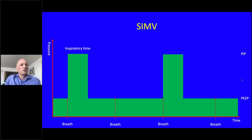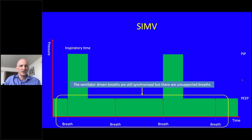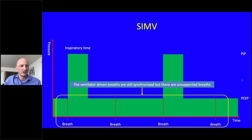With SIMV, only the number of breaths we decide to support are supported. The baby gets synchronised ventilation but there are breaths the baby takes that aren't supported. Think about trying to breathe through a straw — we're bypassing normal anatomy — and you can see why SIMV tends not to be as good for premature babies. Cochrane reviews suggest babies on SIMV are ventilated longer and grow less well, probably because of those unsupported breaths and the energy expended breathing through an endotracheal tube.